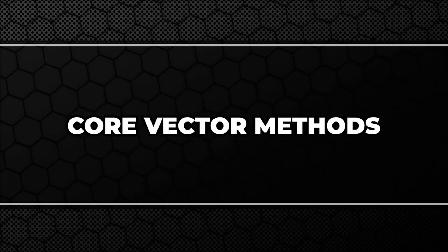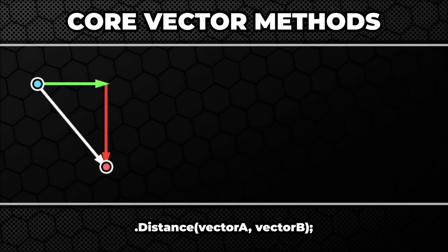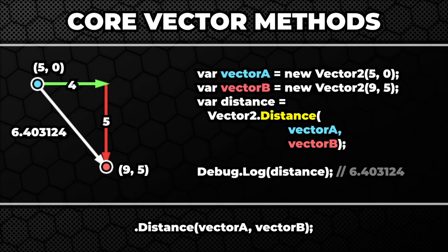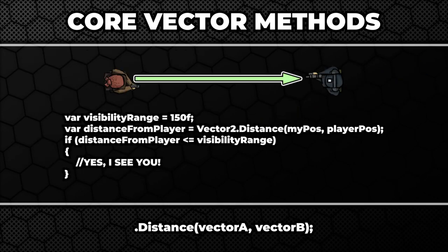Let's have a look at some useful methods provided by the vector class. Let's start with the one I use the most: Distance. Very often we use vectors to describe positions, and the distance method allows us to know how far from each other they are. Some common use cases would be finding the closest enemy or checking if the enemy sees us.